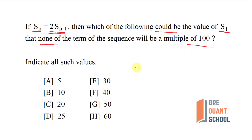So the question is: given this formula, which option could be the first term of the sequence such that no term of the sequence becomes a multiple of 100?